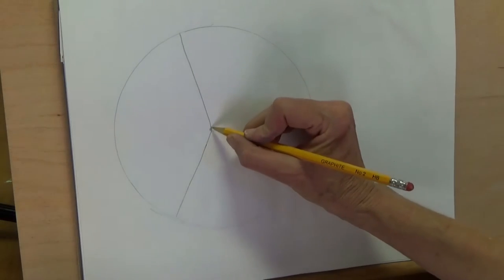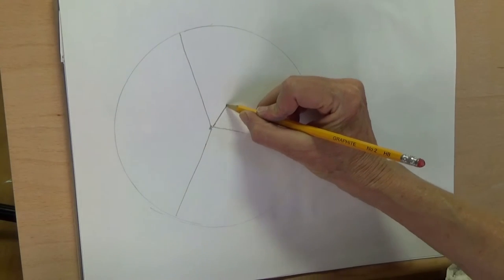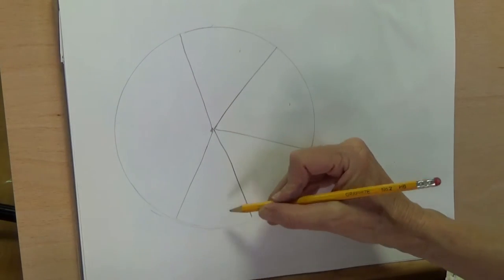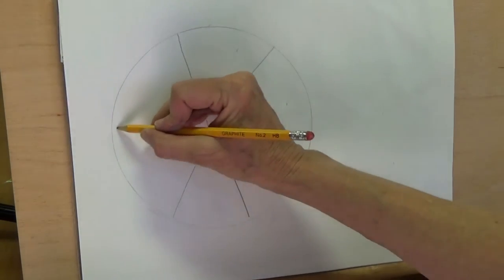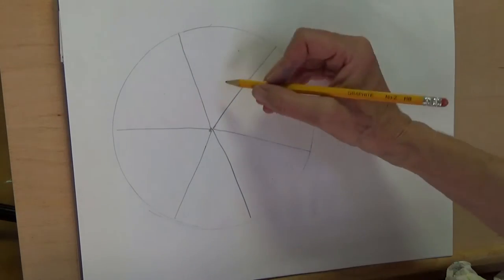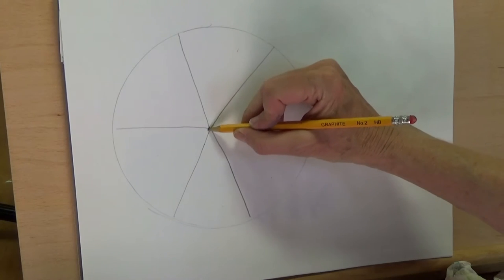So I'm going to have one line creates two sections, one line two sections, one line two sections. Now you have six spaces. We need more, so each one of the sections that are there you're going to divide again with one line.